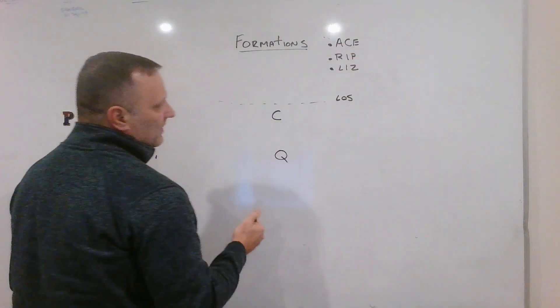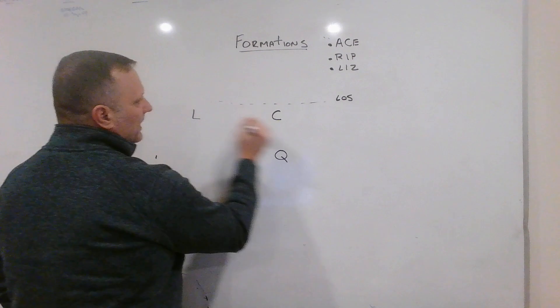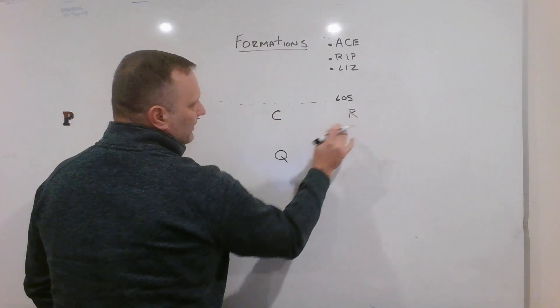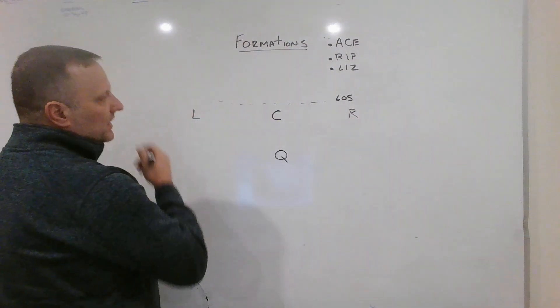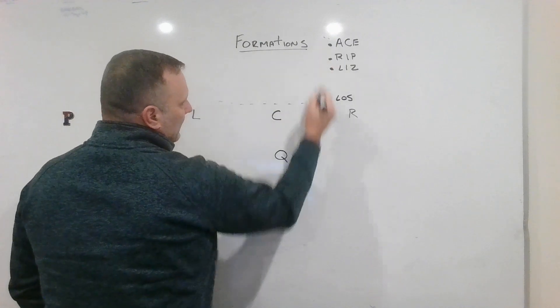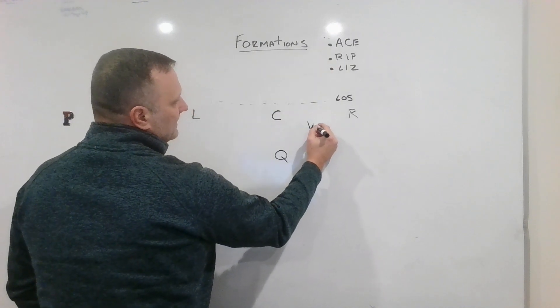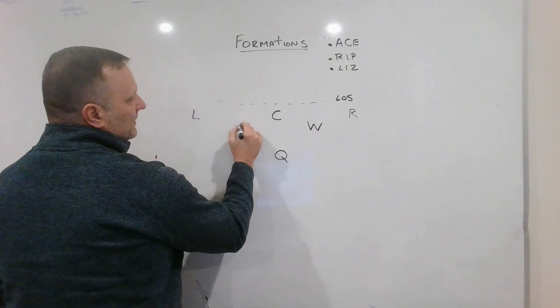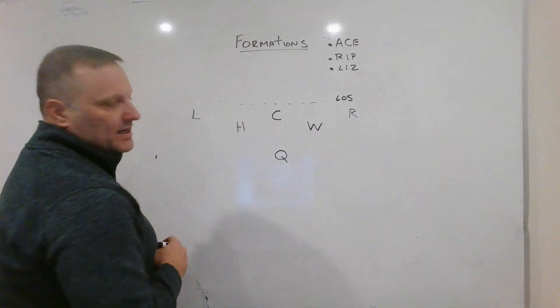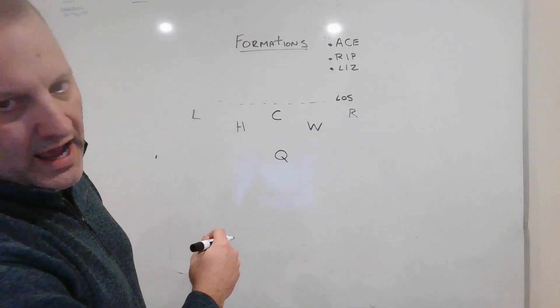First formation is ACE. We have the L and the R. So the R is always to the right, L is always to the left. In ACE formation, a no back set, there's going to be a wing. And then the halfback is going to be set up like that. So wing to the right, halfback to the left.